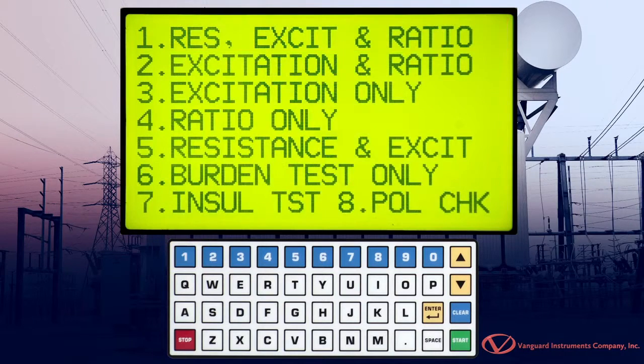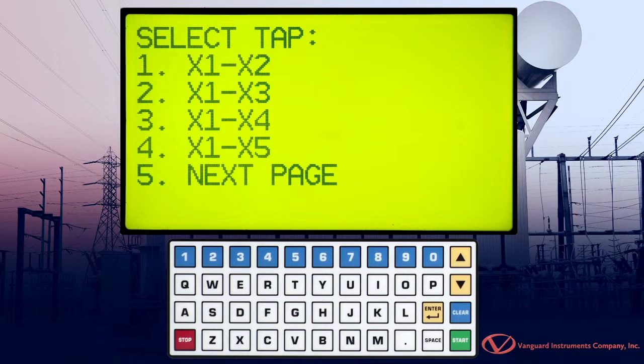Press the 1 key to select Run Test. Press the 4 key to select Ratio Only.